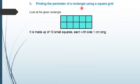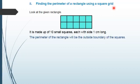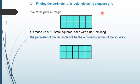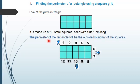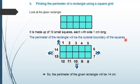Now, finding the parameter of a rectangle using a square grid. Look at the given rectangle — it is made up of 10 small squares, each with the side 1 cm long. The parameter of this rectangle will be the outside boundary of this shape. In order to find out the parameter, we will walk around the outside boundary of this rectangle: 1, 2, 3, 4, 5, 6, 7, 8, 9, 10, 11, 12, 13, 14 spaces. So it took us 14 spaces to walk around the outside of this shape. Therefore, the parameter of the given rectangle will be 14 cm.